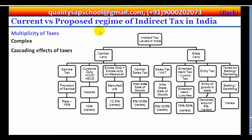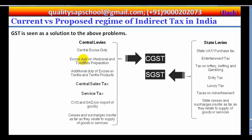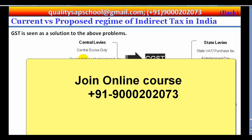The proposed regime of indirect tax in India is GST — Goods and Services Tax. It is a system of indirect taxation in India merging most of the existing taxes into a single taxation. GST would be a comprehensive indirect tax on the manufacture, sales, and consumption of goods and services throughout India, to replace taxes levied by the central and state governments. Goods and Services Tax would be levied and collected at each stage of sale or purchase of goods or services, based on the input tax credit.